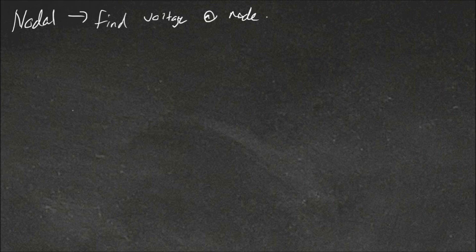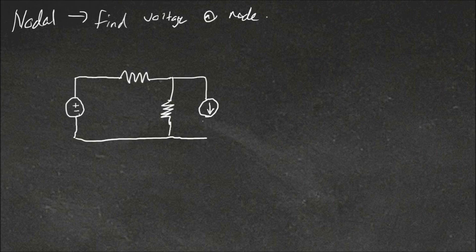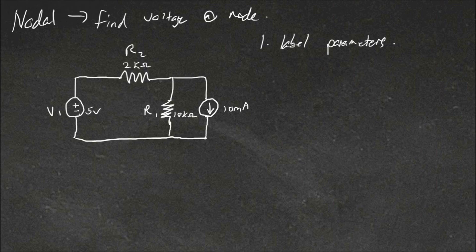Start off with a basic circuit. So here's our basic circuit. We're given a few values. There's a 5V source, 10mA source and 2 resistors. So the first step in nodal analysis is to label parameters. We'll call this V1, this one R2 and R1, and we'll call this I2.